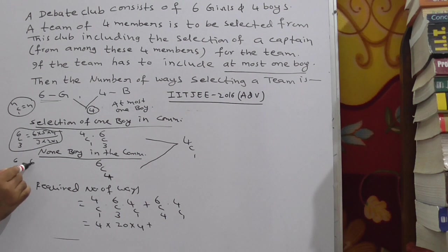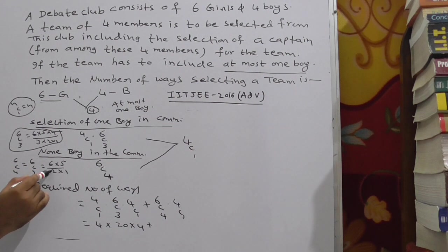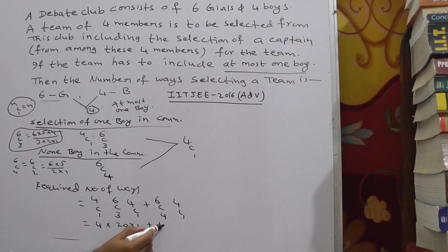6C4 is nothing but 6C2. How is it? 6 minus 4, 2 only. 6C2. Follow the technique. This is 6 into 5 by 2 into 1. So 2, 6 by 2, 3. 3 into 5, 15. So 6C4 is 15 into 4. C1 is 4. So total what is your answer?